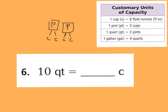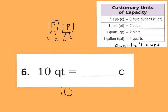Now that we've discovered 1 quart equals 4 cups, I'll write that on our chart. We're going from a big unit down to a smaller unit, so we'll have more cups than quarts. Since 4 cups are in 1 quart, if I have 10 quarts we multiply: 10 times 4 equals 40 cups.